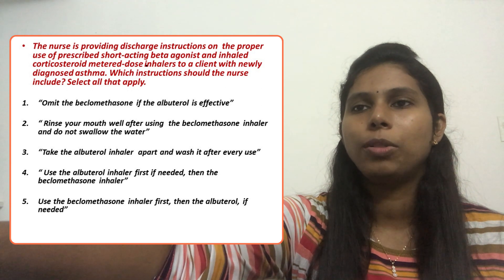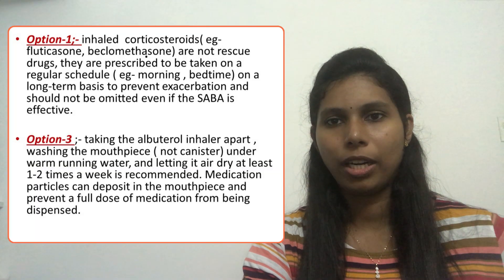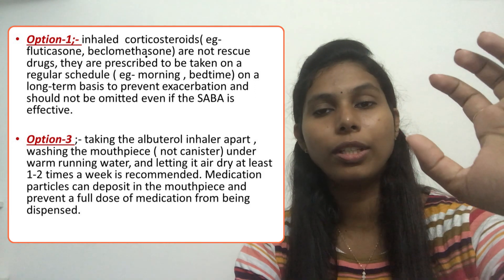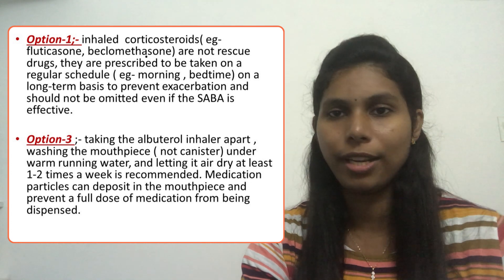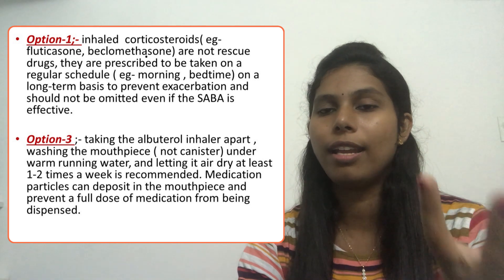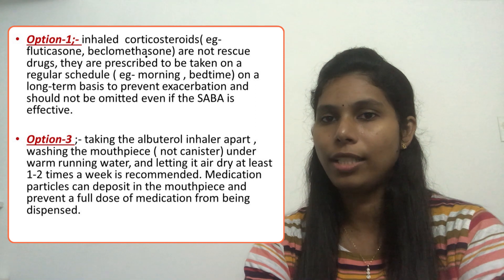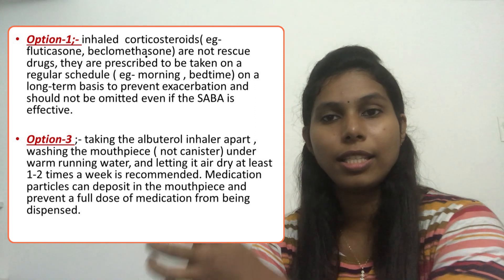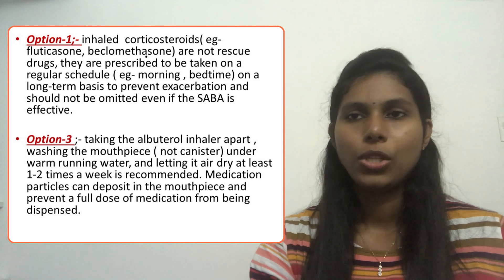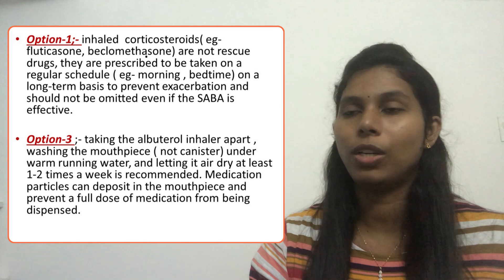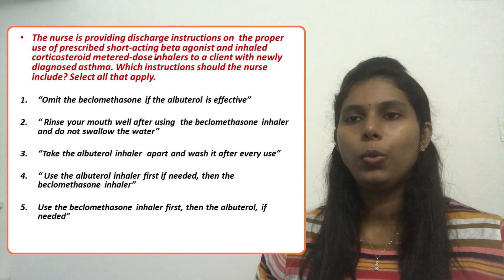Option 1 says omit the beclomethasone if the albuterol is effective. Beclomethasone is a long-acting medication used to control airway inflammation, while albuterol is entirely different — it is a short-acting rescue medication. We cannot stop the long-acting medication just because albuterol is effective. If the doctor prescribed beclomethasone, the client must continue taking it, as it is essential for long-term control and reduction of airway inflammation. So option 1 is incorrect. Our final answers are option 2 and option 4.